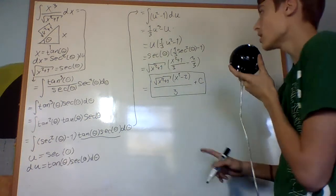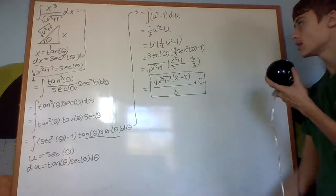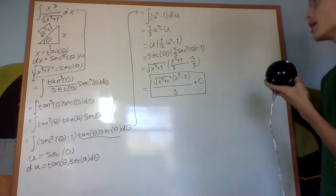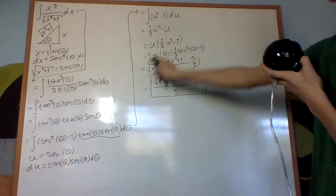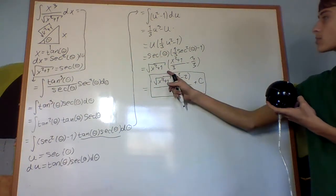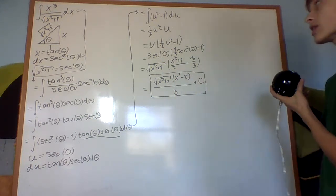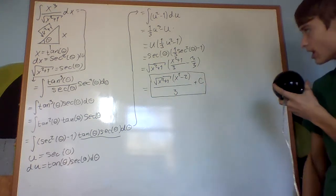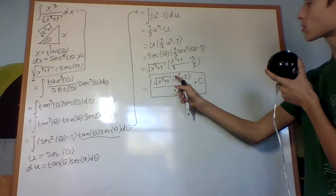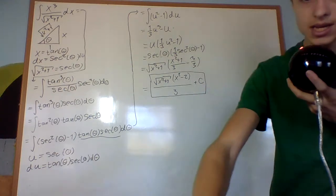I factored out a u and plugged in for u equals secant theta, giving secant theta times 1 third secant squared theta minus 1. Then I substituted secant theta equals square root of x squared plus 1 to get square root of x squared plus 1 times x squared plus 1 over 3 minus 3 over 3, because 1 is 3 over 3. The final answer is the square root of x squared plus 1 times x squared minus 2 over 3 plus C.